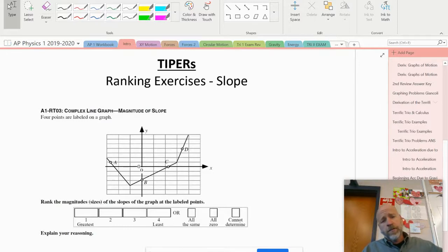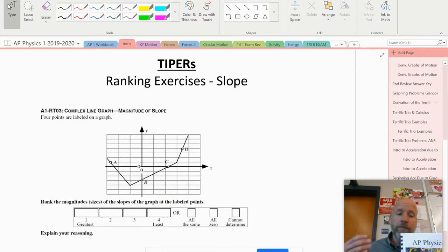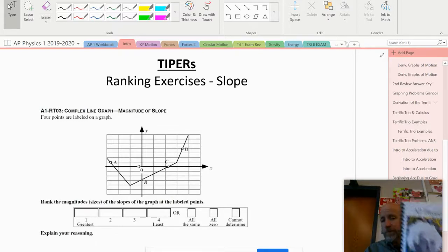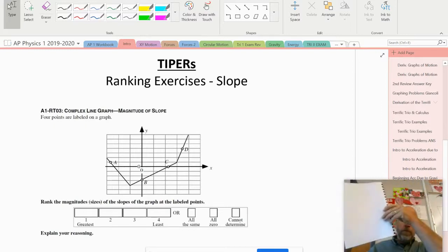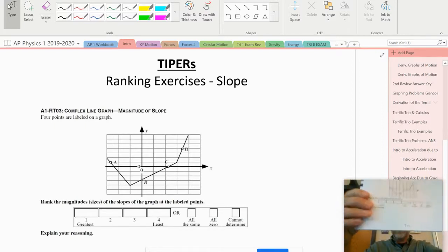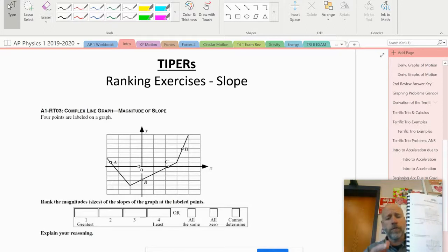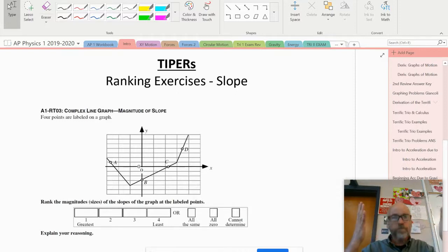Hey everyone, so today we're going to practice some problems called TIPERs, taken from a physics textbook. These are some of the more interesting problems we can do all year, and they're written by the main author of the AP Physics 1 test, so they're good practice. You'll find this in your AP Physics 1 booklet at the end of the problem section, section T-1, titled Ranking Exercises - Slope. Let's get to it.